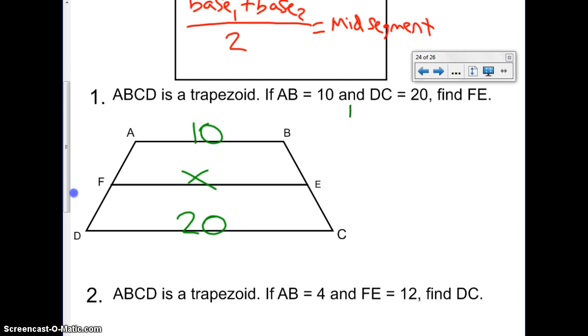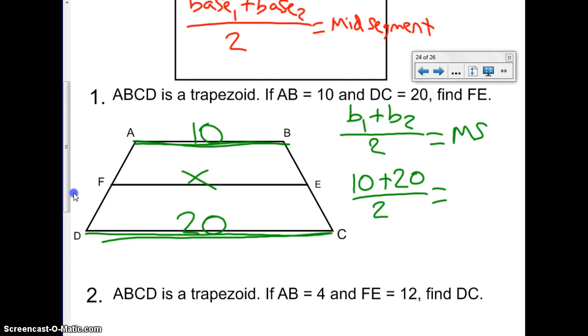So, let's write our formula. I'm just going to write B1 plus B2, like Base 1 plus Base 2 over 2. And for Mid-Segment, I'm going to write MS. Alright, just to abbreviate so it's not as much writing. So, if you look at our picture from before, we know that this one is our Base 1 and this is our Base 2. So, let's just plug in the values. B1 is 10. B2 is 20. Divided by 2 is going to give us that Mid-Segment, which is FE.